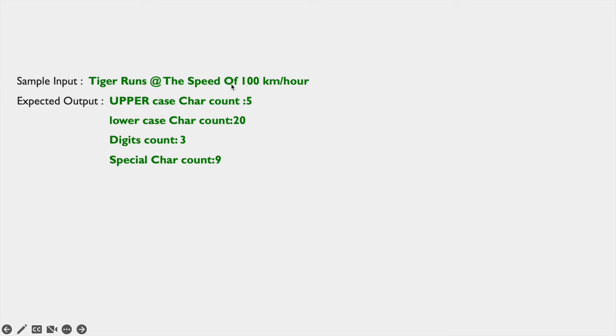The result should be uppercase character count is 5. Here T, R, T, S, O — these 5 uppercase characters are there, so the count is 5.